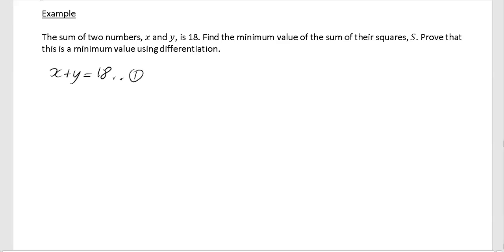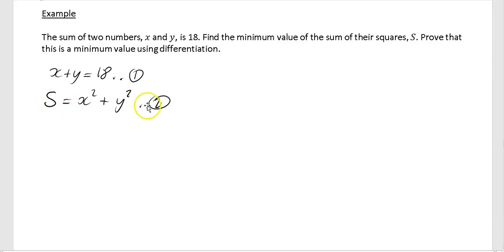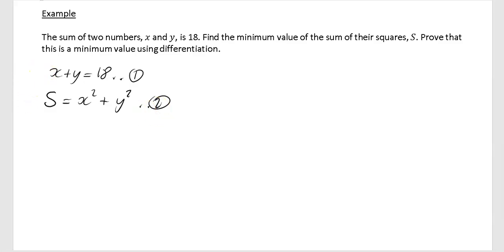It says find the minimum value of the sum of their squares s, so s equals x² plus y². That is equation 2. The problem is we can't differentiate s with respect to anything because it has two variables — x and y. So we have to get equation 2 into just one variable. We do that by rearranging equation 1 to give y equals 18 minus x.